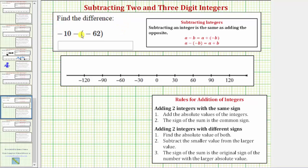We're asked to find the difference. We have -10 minus -62. To find this difference, we'll write the difference as a sum and then find the sum using the formal rules for adding integers as well as using the number line.